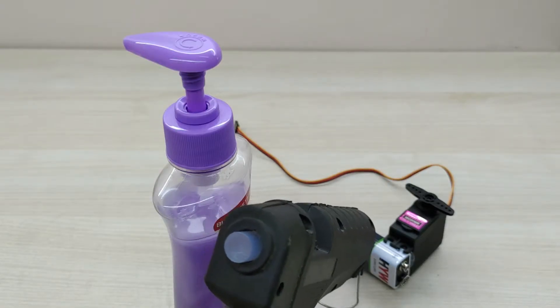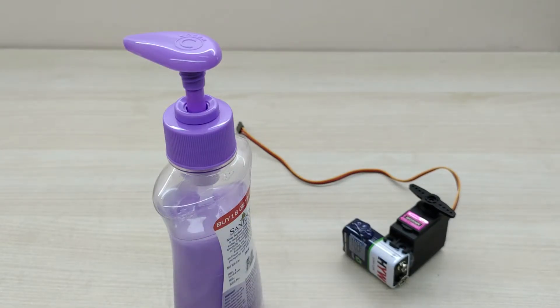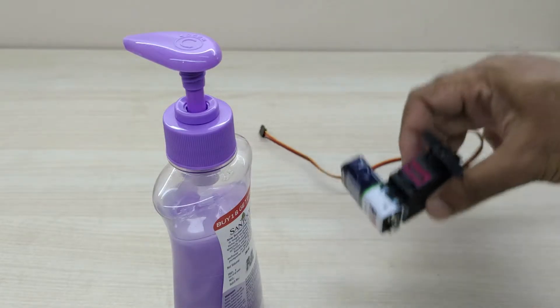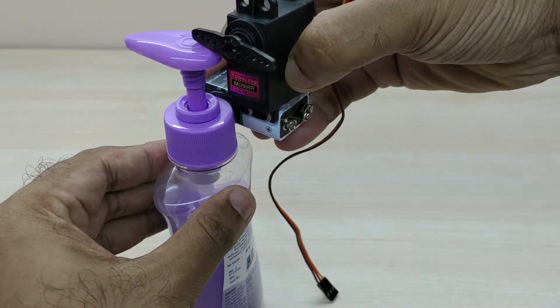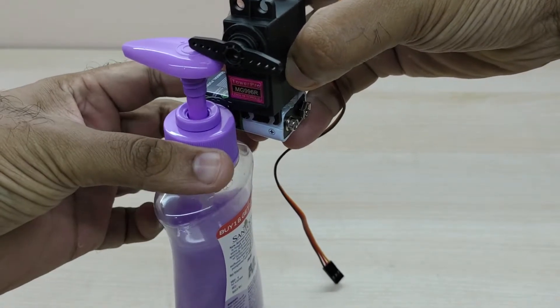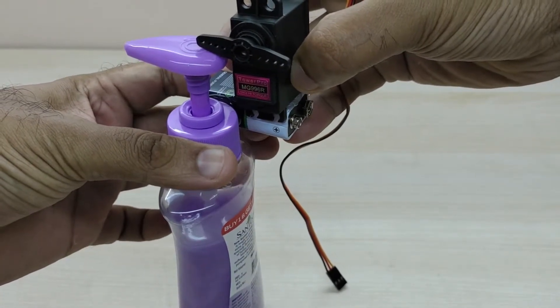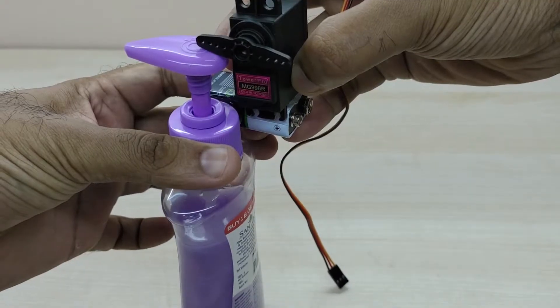Next, fix the battery along with the servo motor onto the hand sanitizer at the top cap location as shown. The arm of the servo motor has to come just on top of the location where the hand sanitizer has to be pressed for dispensing the liquid.